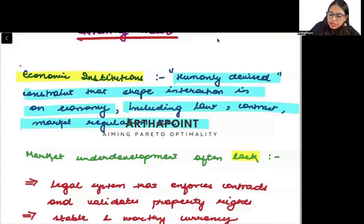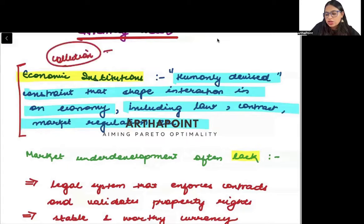That for example, if there is collusion, if all companies collude and they start charging high prices, then we know that we have something which is known as the Competition Act.